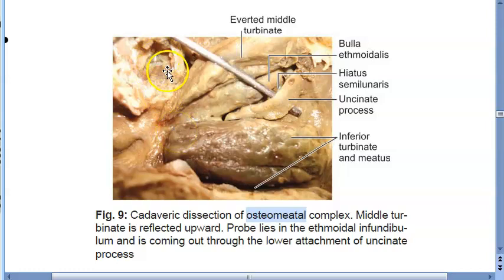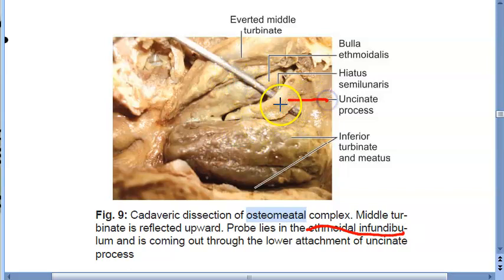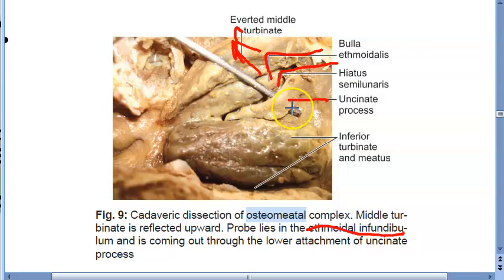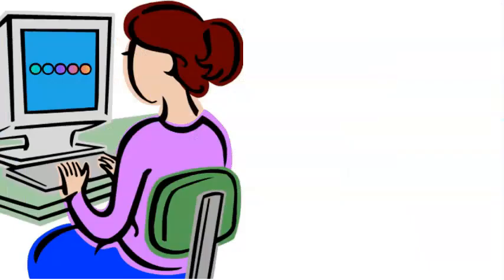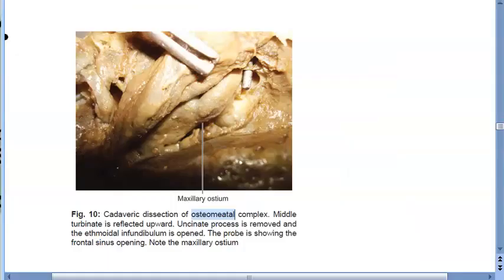Let us look at the cadaveric images in the textbook. In this cadaveric dissection of the osteomeatal complex, the middle turbinate is reflected upward. A probe lies in the ethmoidal infundibulum behind the uncinate process. The image shows the averted middle turbinate, under which you see the uncinate process, the ethmoidal infundibulum, hiatus semilunaris, and bulla ethmoidalis. The probe is coming out through the lower attachment of the uncinate process.